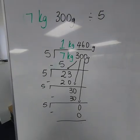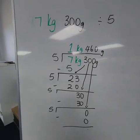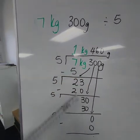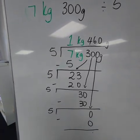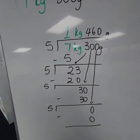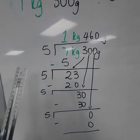Another way of doing the same equation of 7 kg and 300 grams divided by 5 is when we do long division. And there's no regrouping. As you can see, we'll just ask ourselves,